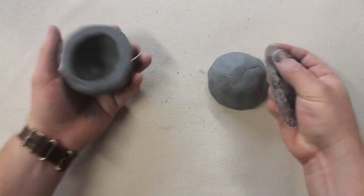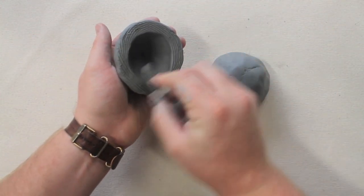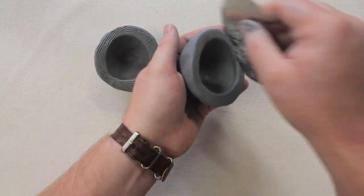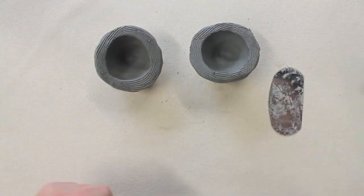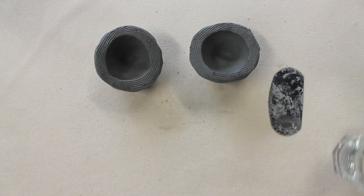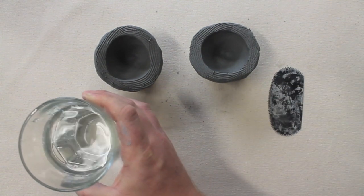The next step is to use the serrated rib tool, also known as the potato chip, to score the surfaces where they'll connect. Scoring creates a deep cut in the surface that allows the clay to grab together.